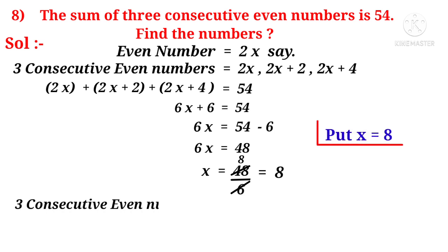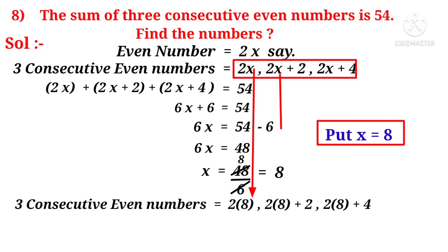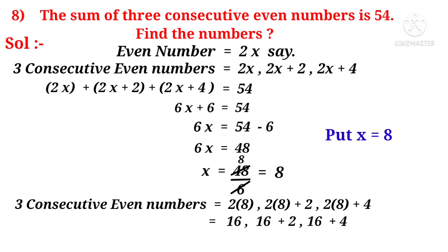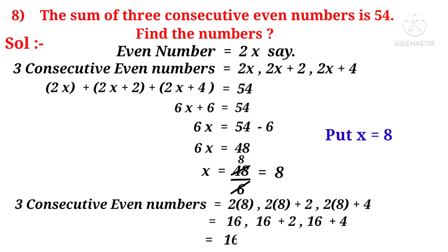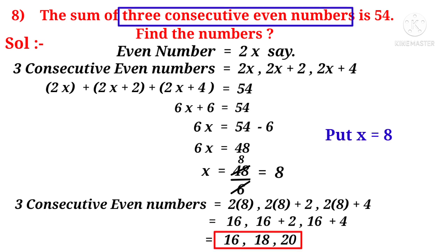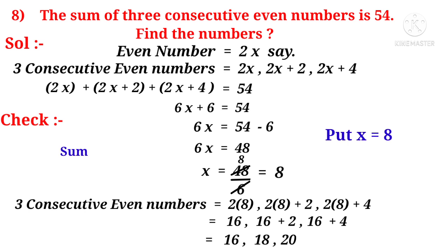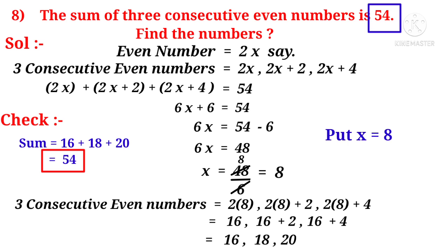Put X equals 8 in the three consecutive even numbers. We get 2×8, 2×8 plus 2, and 2×8 plus 4. Now, 2×8 is 16. So the first even number is 16, second is 18, and third is 20, because 16 plus 2 is 18 and 16 plus 4 is 20. Let us verify: 16 plus 18 plus 20 gives 54, which matches the problem. So it is correct.